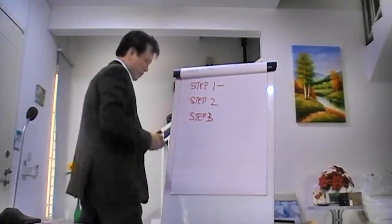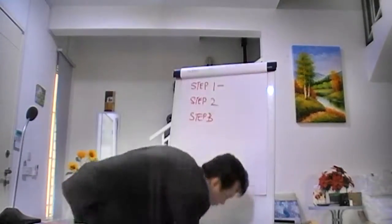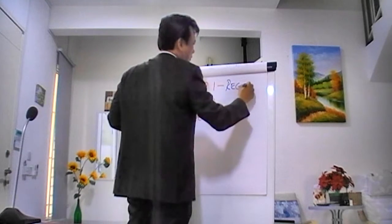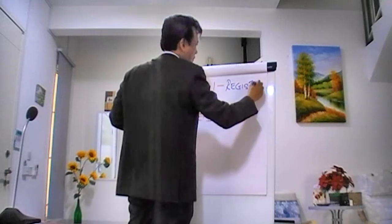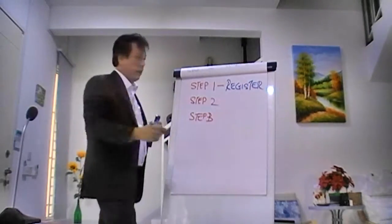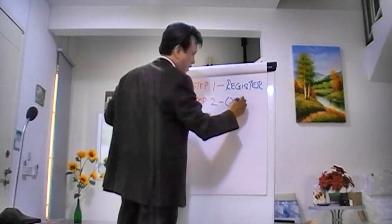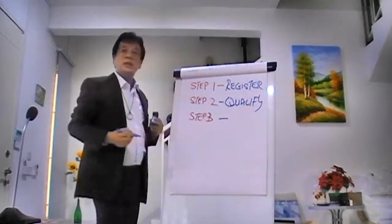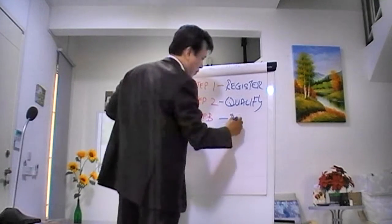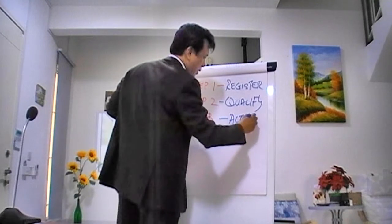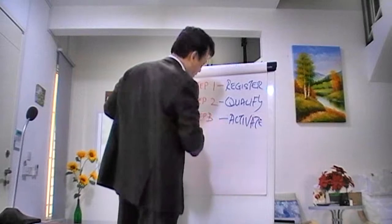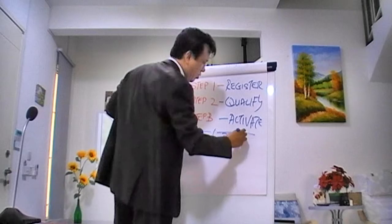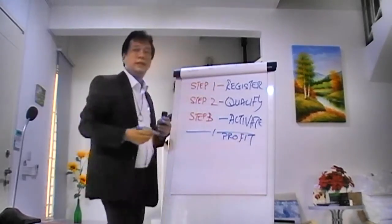Step number one is to register. Step number two is to qualify. Step number three is to activate. Now all these steps have one common goal, and that common goal is to profit.